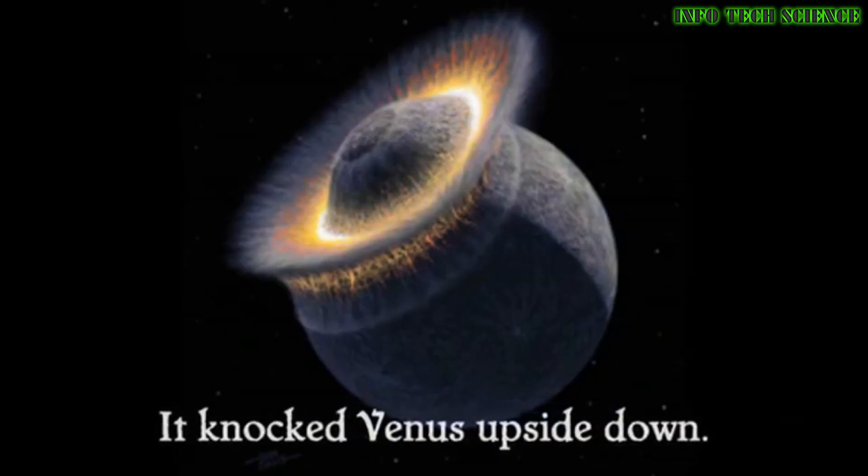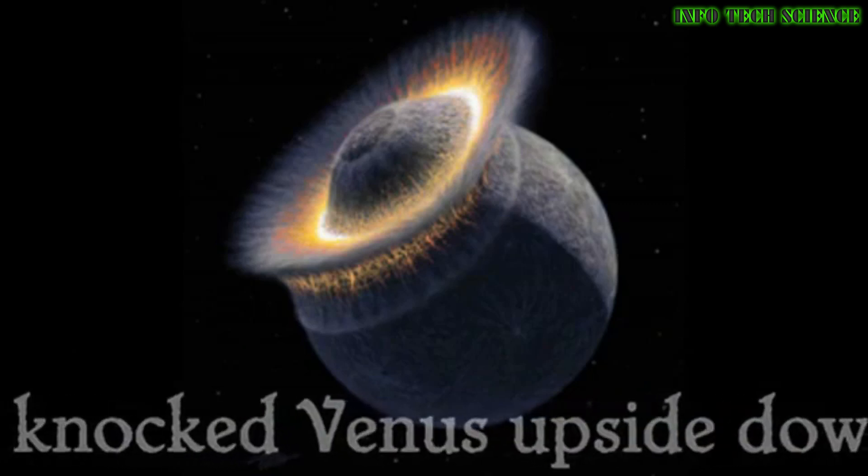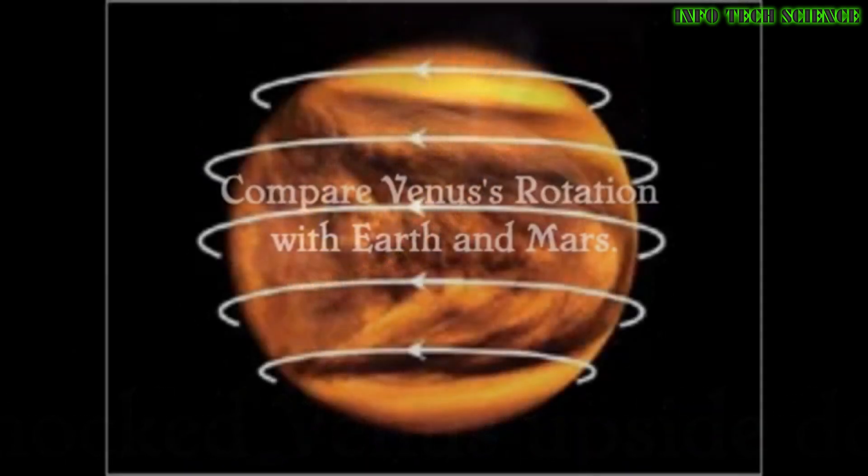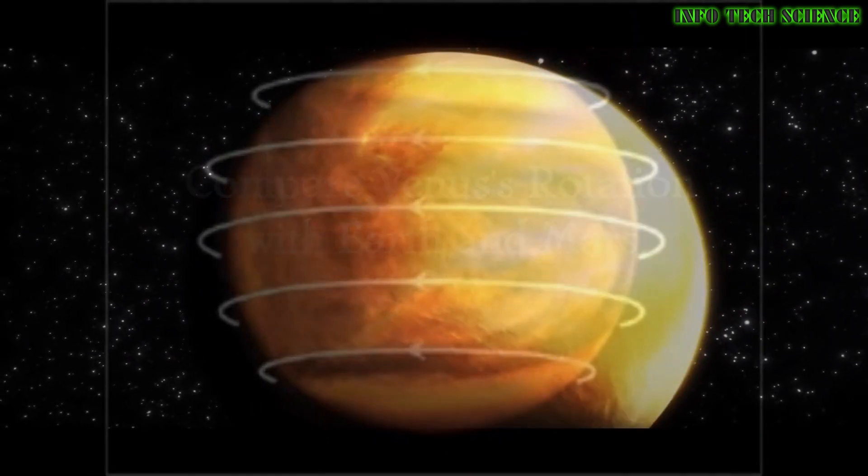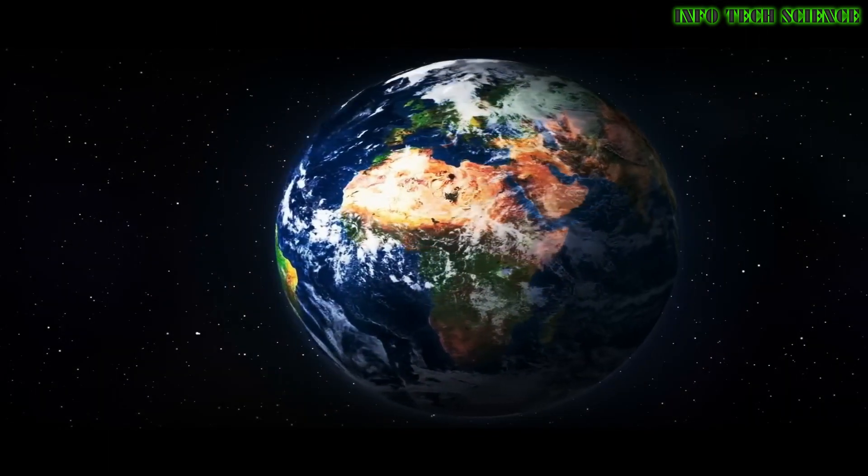This video guide is related to planetary rotation direction. Usually all planets rotate in one direction, but Venus and Uranus rotate in the opposite direction or retrograde due to large-scale collisions they experienced early in their history.